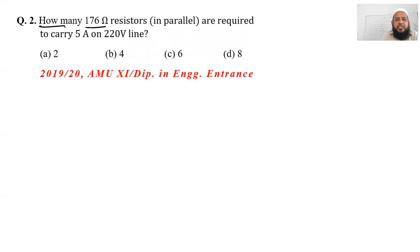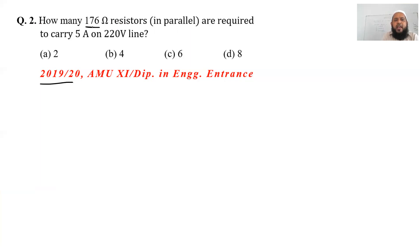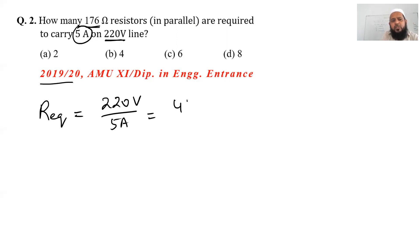Now let us talk about question number 2: How many 176-ohm resistors in parallel are required to carry 5 ampere on a 220-volt line? This is simple. First, we find the equivalent resistance: R_eq = voltage / current = 220 / 5 = 44 ohms.